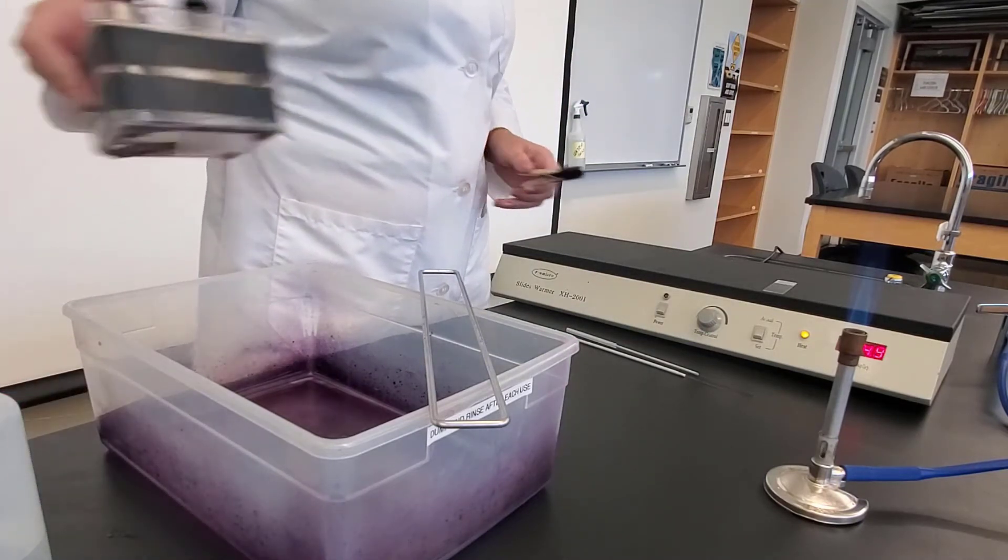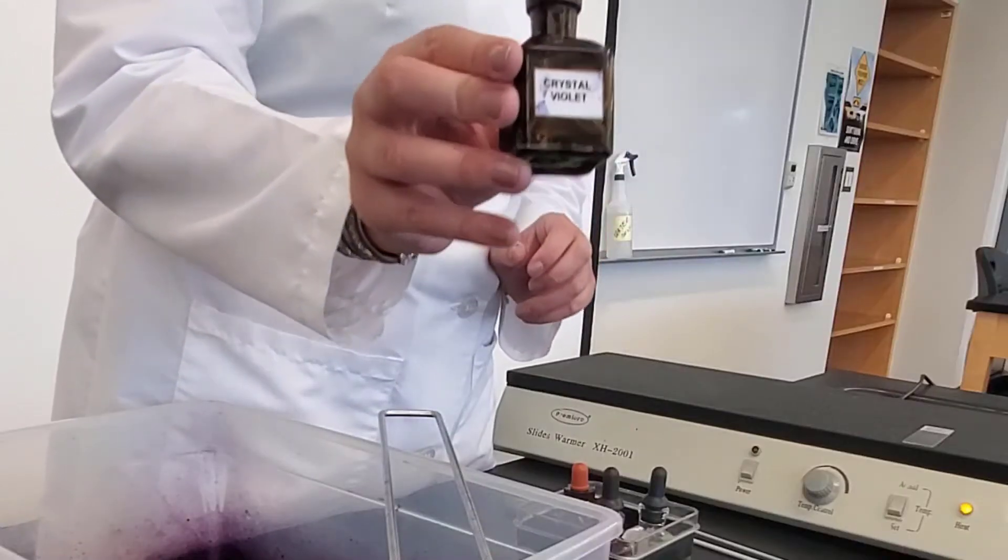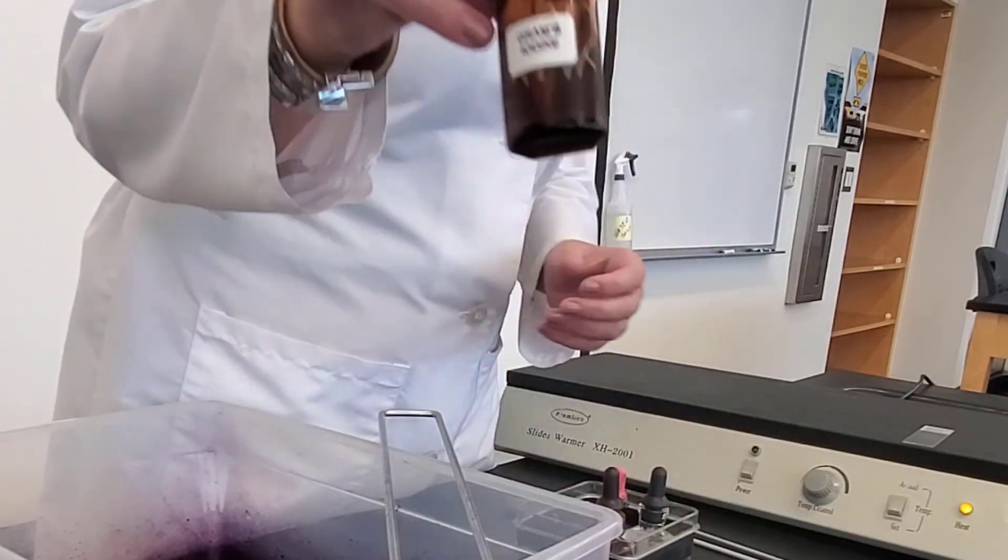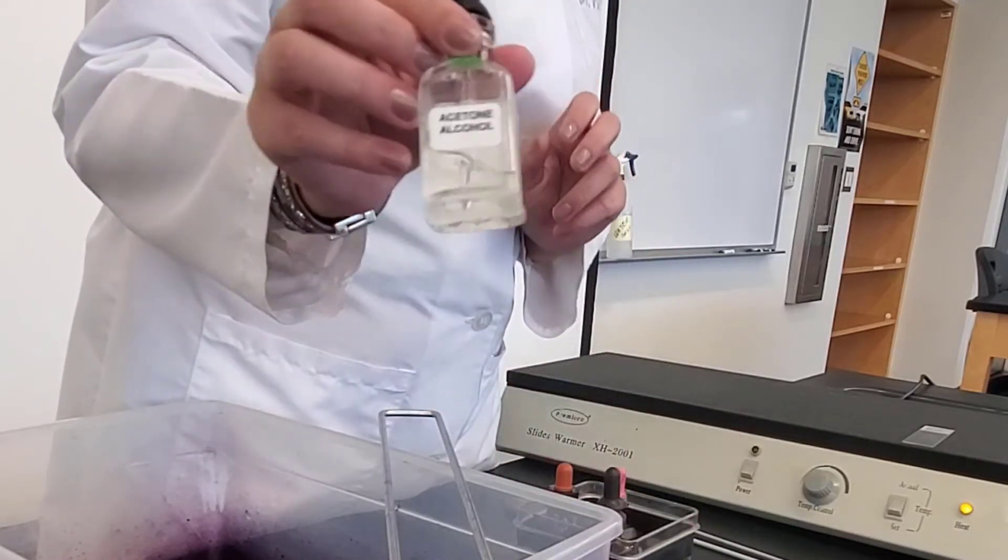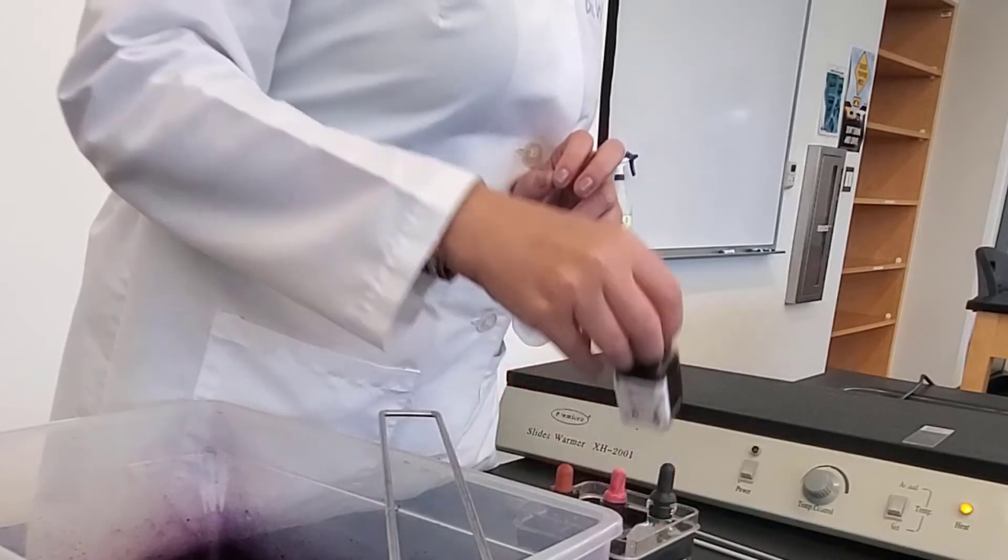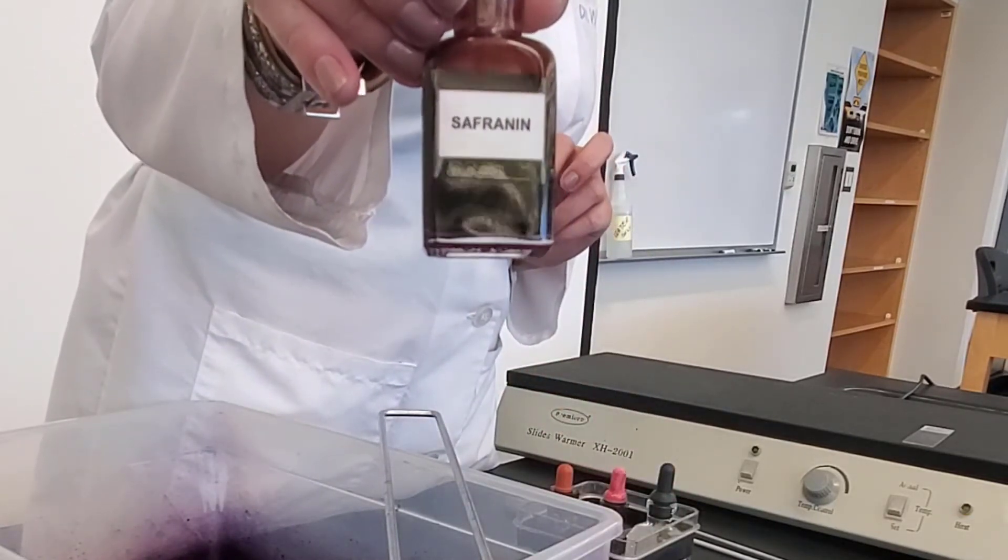And while I'm letting that dry, I'm going to grab my Gram Stain Kit. In my Gram Stain Kit, I have my Crystal Violet. I have my Iodine. This is my Mordant. I have my Decolorizer, my Acetone Alcohol. And I have my Safranin, which is my Secondary Stain or Counter Stain.